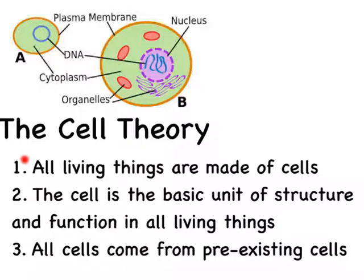All living things are made out of cells — that's thanks to Schleiden and Schwann. The cell is the basic unit of structure and function in all living things, which just means that's the building block that makes us up. And finally, all cells come from pre-existing cells, and that part of the theory is thanks to Virchow.